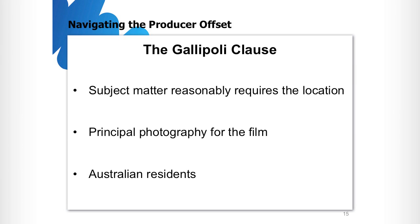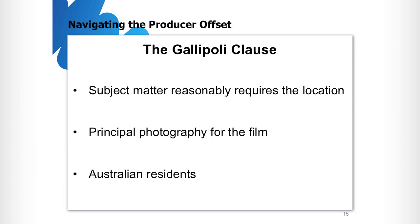The second limb is that it is only for the principal photography of the film. If you're going overseas for your shoot, that's fine. But if you go on a location recce for three weeks in Africa, you can't claim any expenditure for that trip. Or if you have three weeks pre in London just before a six-week shoot in London, that three weeks of pre-production is not claimable because it's not principal photography. The principal photography has to be taking place in that offshore location.